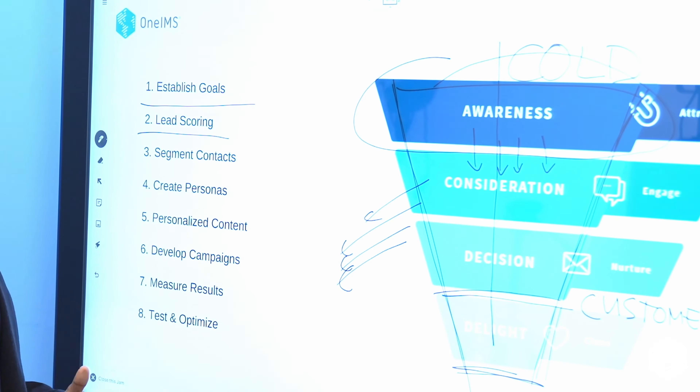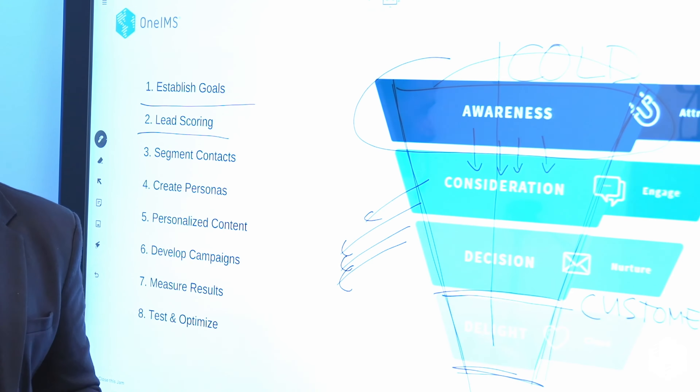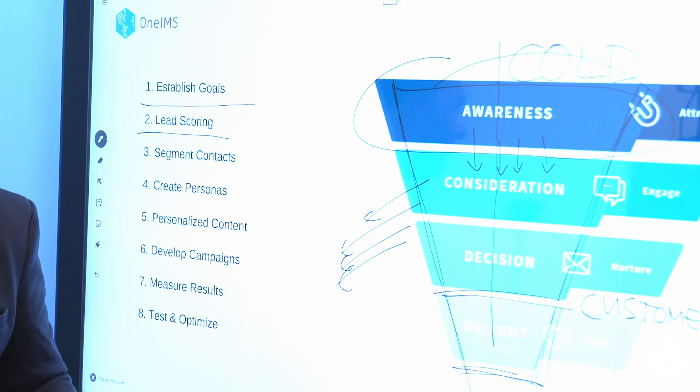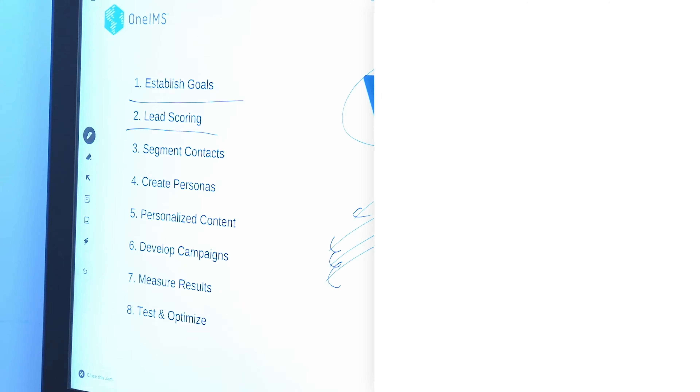Number two: how are you going to score these contacts that are coming in? You're going to get a lot of people filling out the form, but how do you know they're any good? How are you going to measure whether they're a 1 out of 10 or a 9 out of 10? You're going to need some goals so that you can start scoring them.